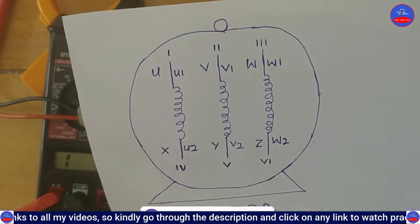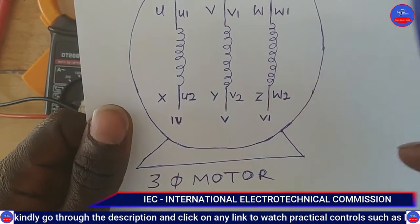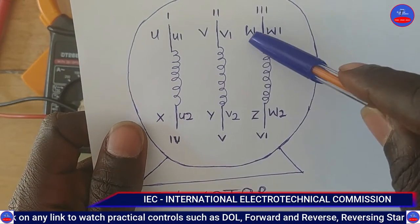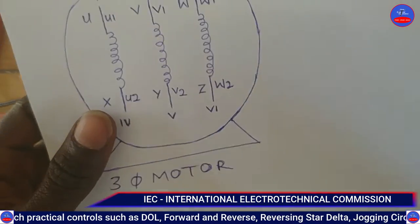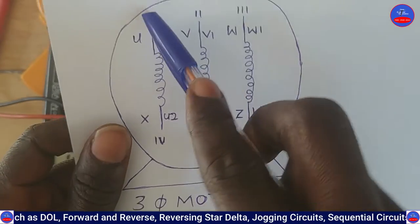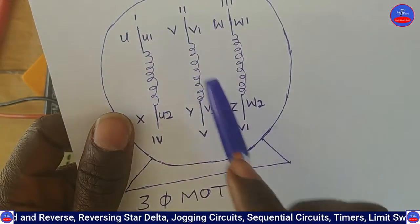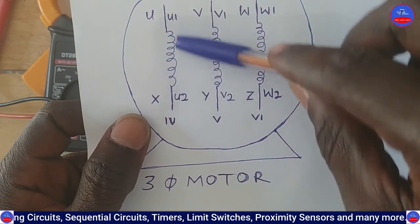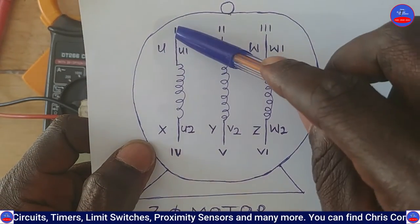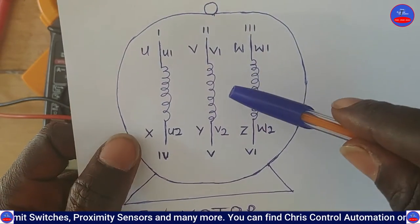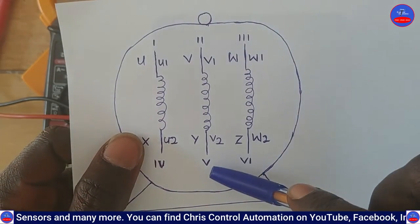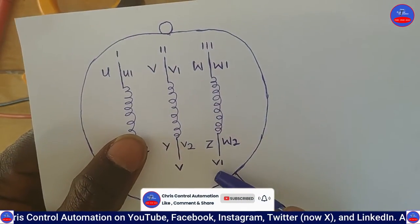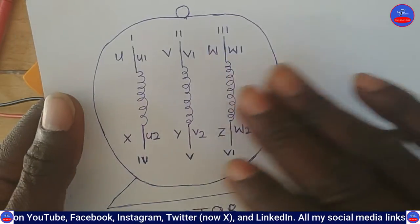Those markings — U/X, V/Y, W/Z — are commonly used by European countries. IEC, the International Electrotechnical Commission, specifies these values. Sometimes when motors are sent for rewinding, they also use Roman numerals. For this winding you have I and IV — that is one and four. Then II and V — that is two and five. And III and VI — that is three and six.